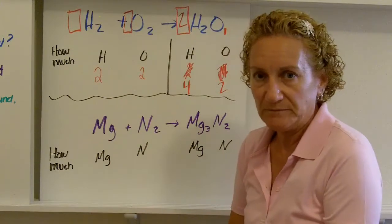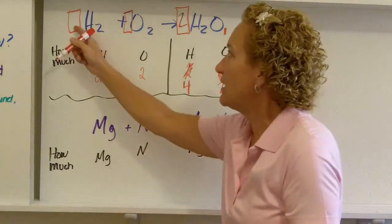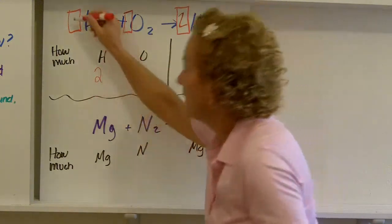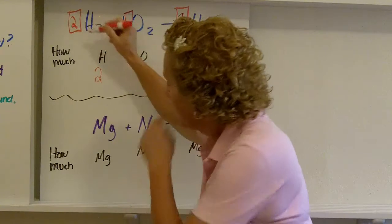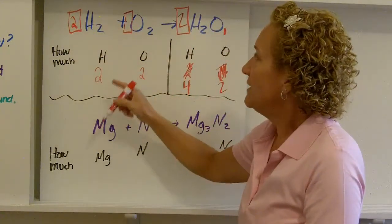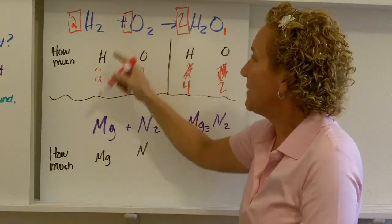I need to go back and look at this side. Is there anything I can do here to make this a four? Absolutely there is. If I make this a two, I have two molecules of hydrogen gas. One molecule of oxygen gas gives me two molecules of water. Let's see if that makes sense.